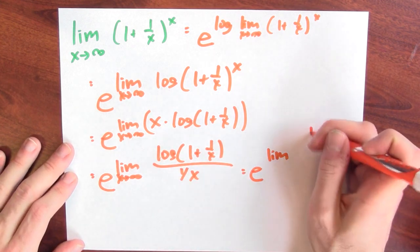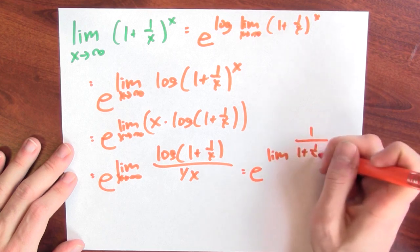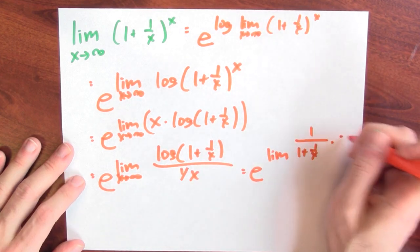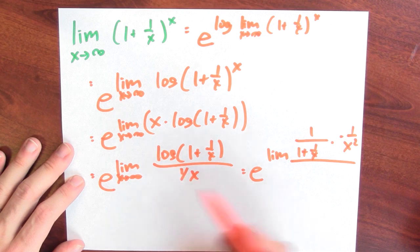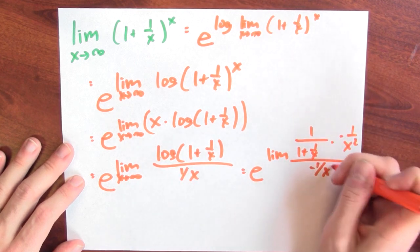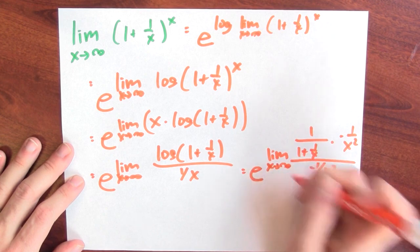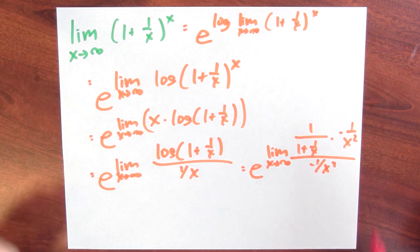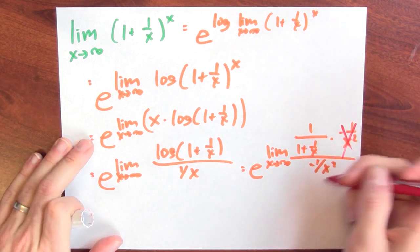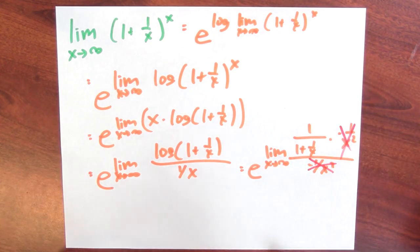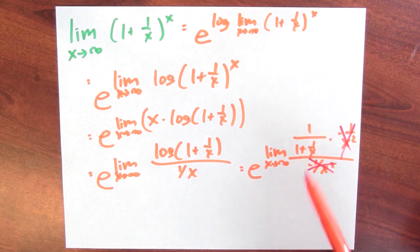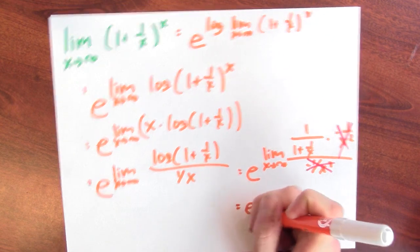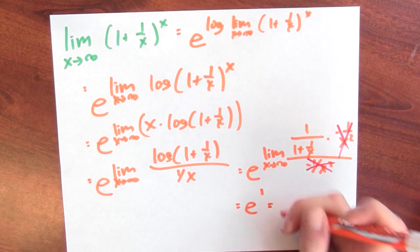By L'Hôpital, I take the derivative of the numerator divided by the derivative of the denominator. The derivative of log is 1 over the inside function times the derivative of the inside, which gives 1/(1 + 1/x) times −1/x², divided by the derivative of 1/x, which is −1/x². The −1/x² cancels, leaving the limit of 1/(1 + 1/x) as x approaches infinity — this gets very close to 1. So the result is e to the first power, which is e. The limit of (1 + 1/x)^x as x approaches infinity equals e.